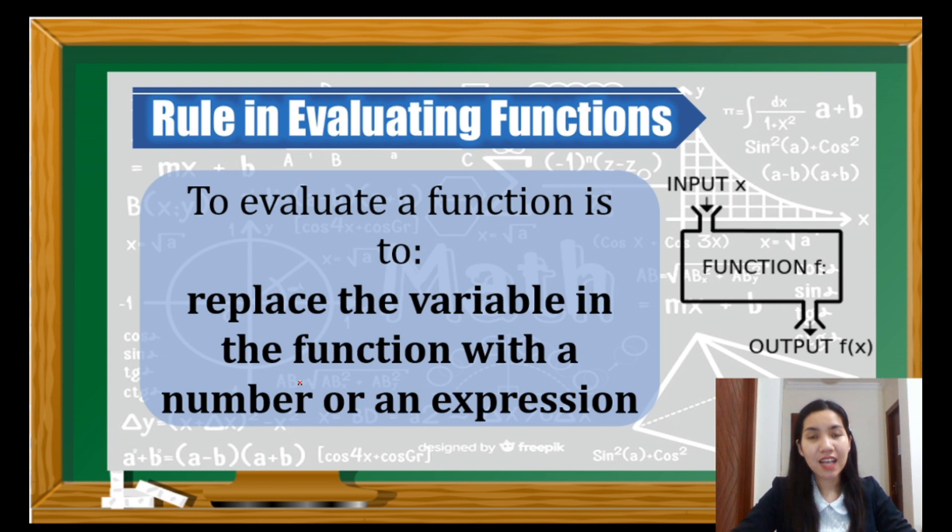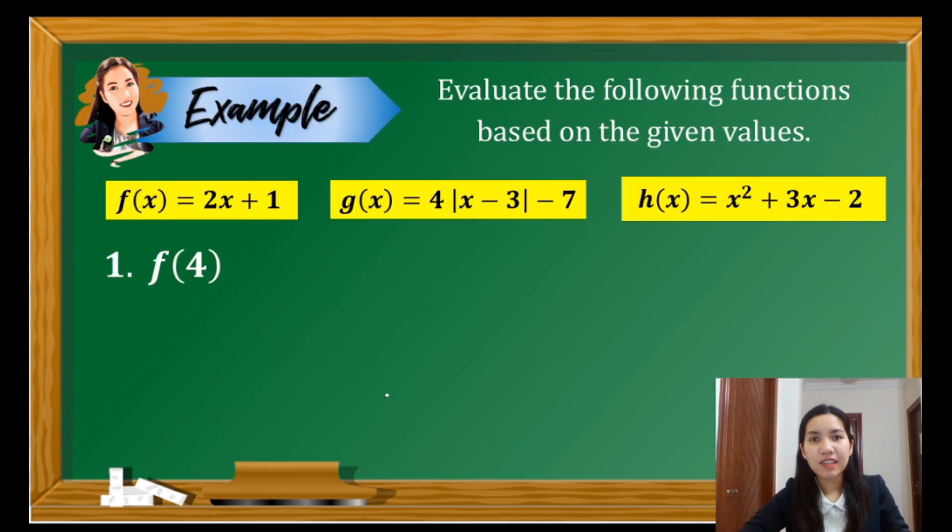This means that the value of the function depends on the value of x. Let us now apply the rule to some examples. Given the functions f, g, and h, let us evaluate them based on the given values. First example, we have to evaluate the function f when x is 4. Following the rule, we'll just simply replace x in the function with 4. So we have 2 times 4 plus 1.